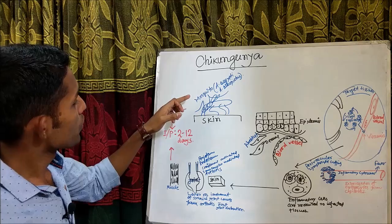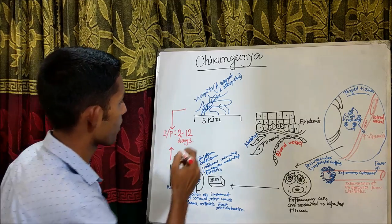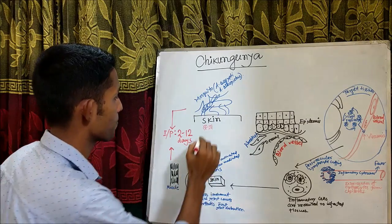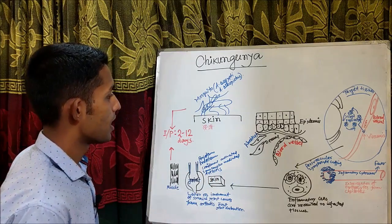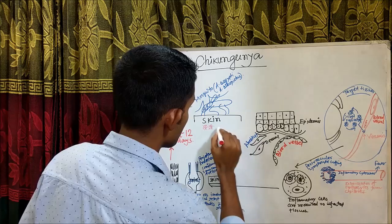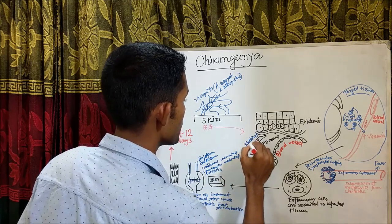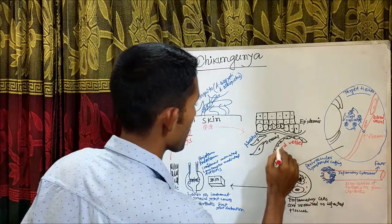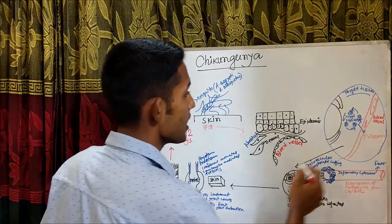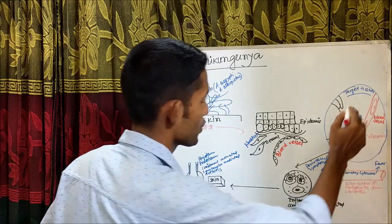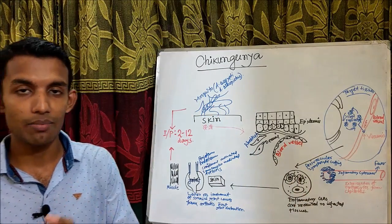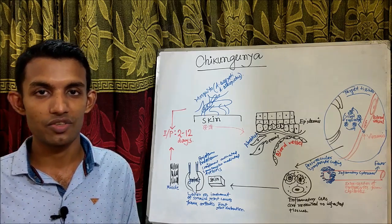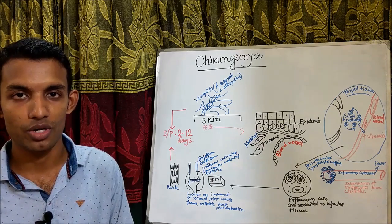When the infected mosquito bites the human, the viruses are introduced into the skin and bloodstream. These viruses replicate in the fibroblasts of the dermis and disseminate through the blood vessels to several tissues. Viral replication then occurs in the target tissues, which are mainly the skin, muscle, and joints, and possibly the liver, spleen, or meninges in newborns or those with underlying conditions.